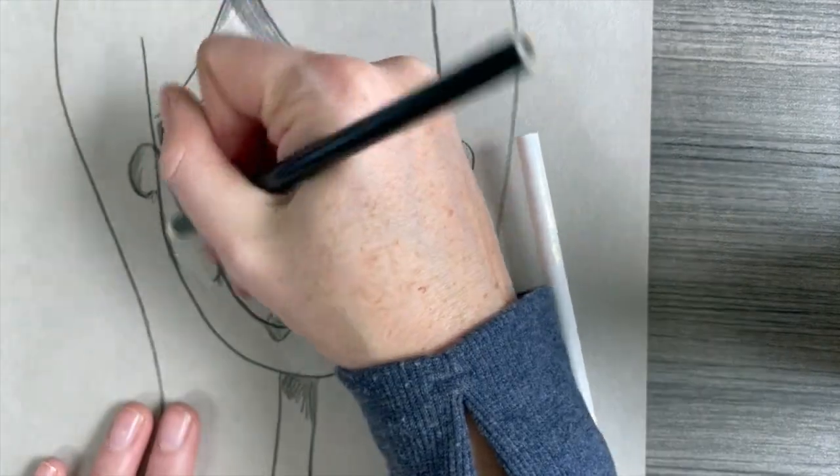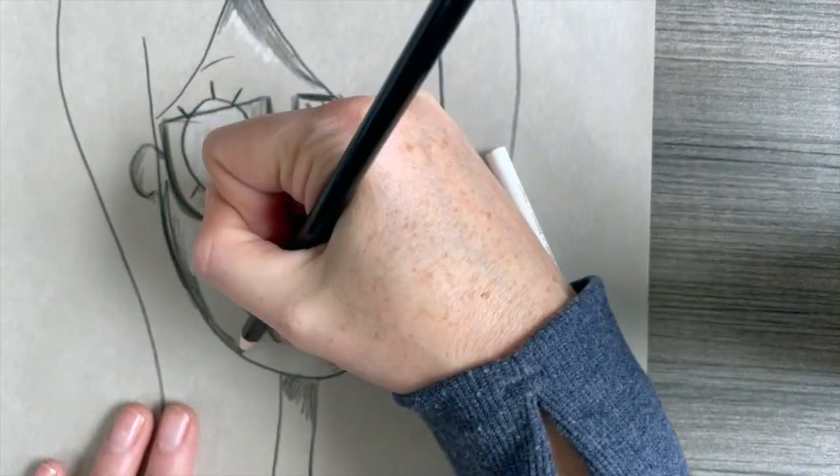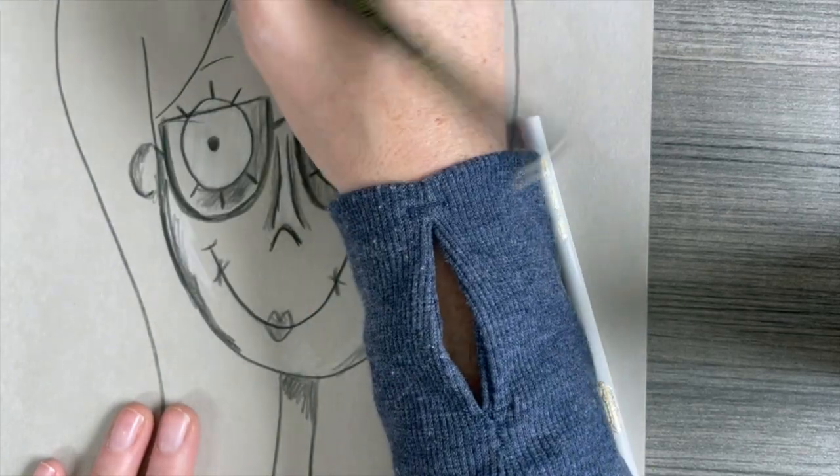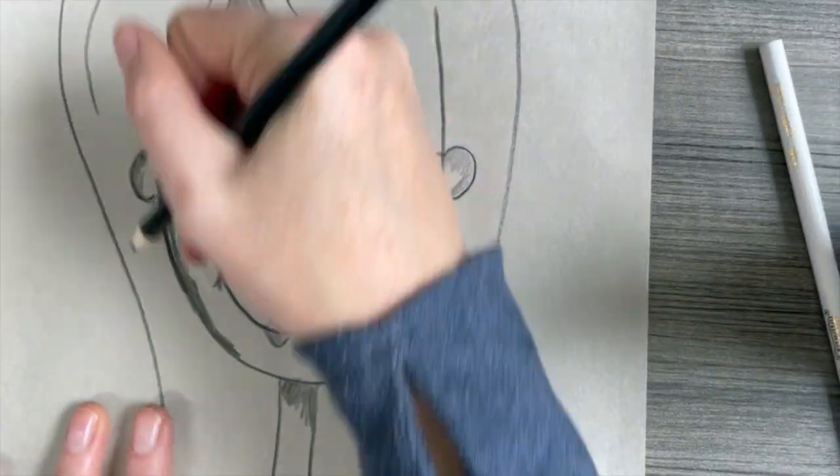So on the bridge of the nose I'm shading, on the cheeks I'm shading a little bit of white. Underneath the neck I'll also shade some white. This creates some strong contrast.